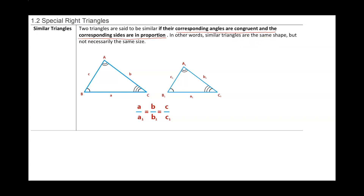If you take any two corresponding sides of a similar triangle, that ratio will equal the ratio of all the other corresponding sides. So A over A1 equals B over B1 equals C over C1.